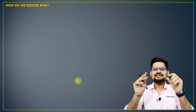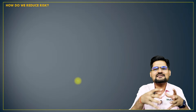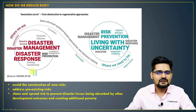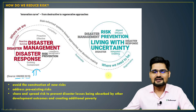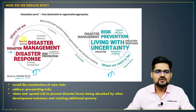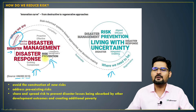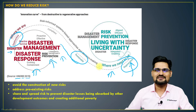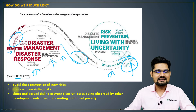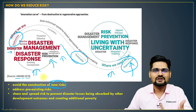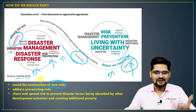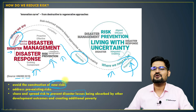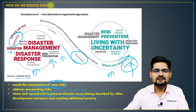When we have so many techniques and assessment models, how do we actually reduce risk? There is a conceptual diagram showing that right now we are in a destructive system state, and we need to move toward sustainable living through disaster management — response, prevention, and gradually reaching a regenerative, sustainable system. Three important points to reduce risk: avoid construction of newer risks when planning something new; address the already existing risks; and share, spread risk prevention to disaster losses and create awareness programs.